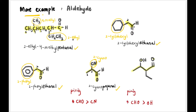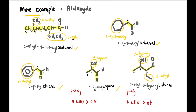Next, we have C double bond O and OH — two functional groups. Again, carbonyl (CHO / aldehyde) has higher priority than OH. So the parent name is butanal (four carbons). It has substituents: OH (named hydroxy) at carbon three and ethyl at carbon two. Writing alphabetically, ethyl comes first. Full name: 2-ethyl-3-hydroxybutanal.